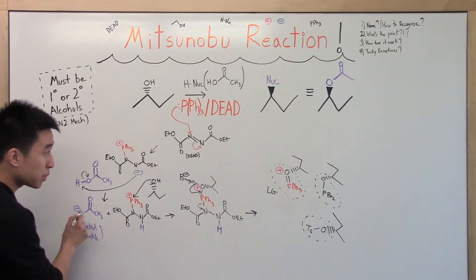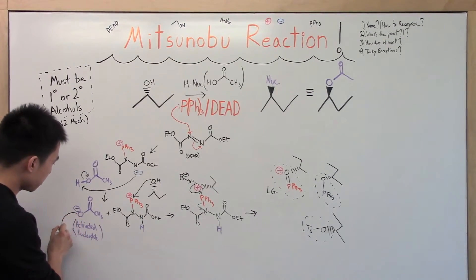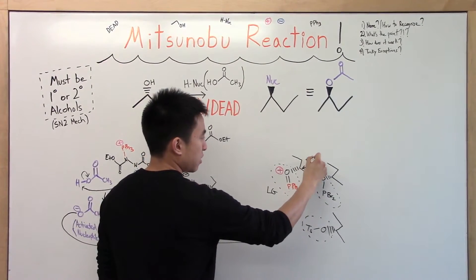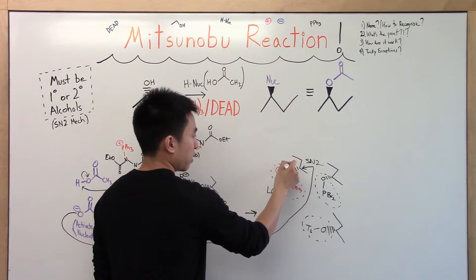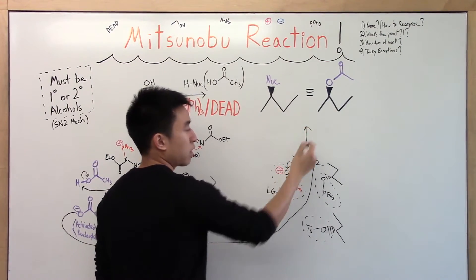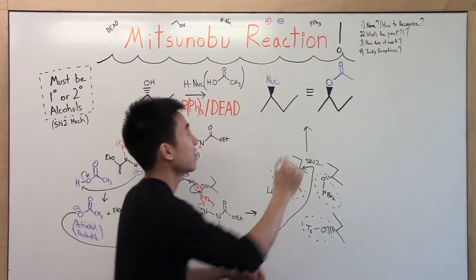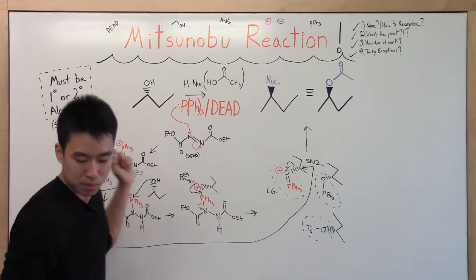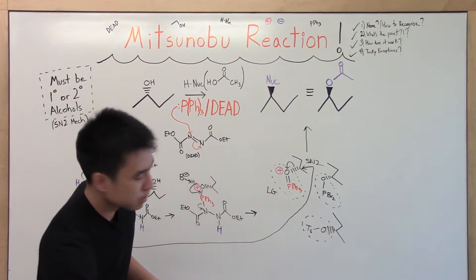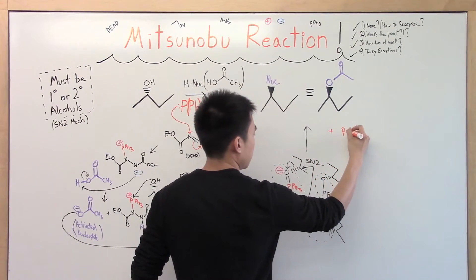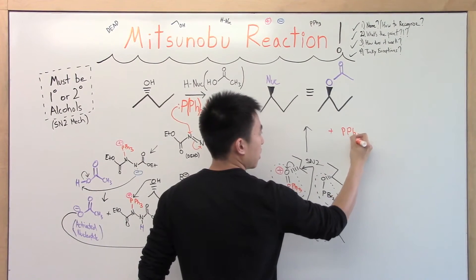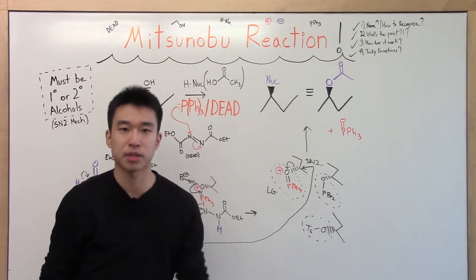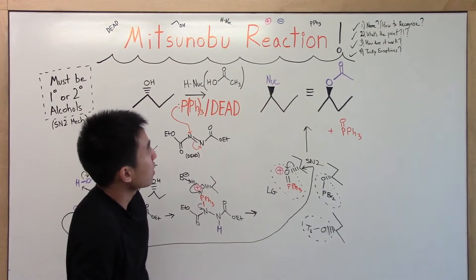Here's where our activated nucleophile comes in and simply does a backside attack as in SN2. It kicks off our great leaving group, and we have our products. Voila. And we also have a PPh3 with the phosphorus double-bonded to the oxygen. Okay, that's the Mitsunobu reaction. Hopefully you guys can appreciate it a little more now. Let me know if anything is not clear or if you want me to re-explain any steps — ask me in the comments down below.